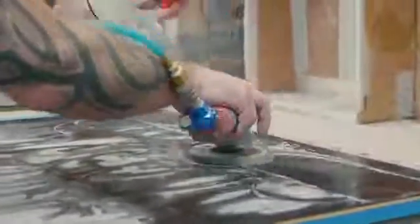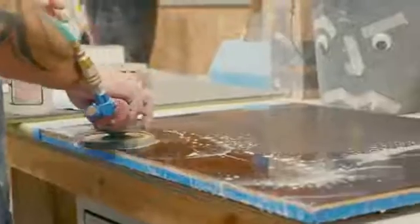Wet sanding is recommended, beginning with 1200 to 1500 grit paper using a DA sander, stepping up to 3000 grit wet sanding, and finishing by wet sanding with 5000 grit paper. These sanding steps should move relatively quickly.